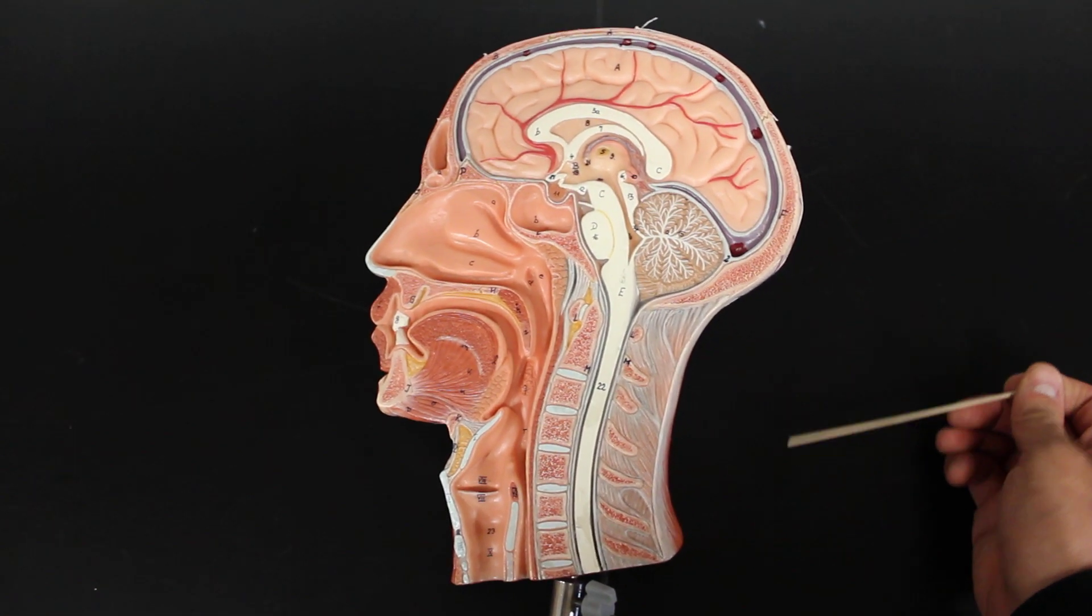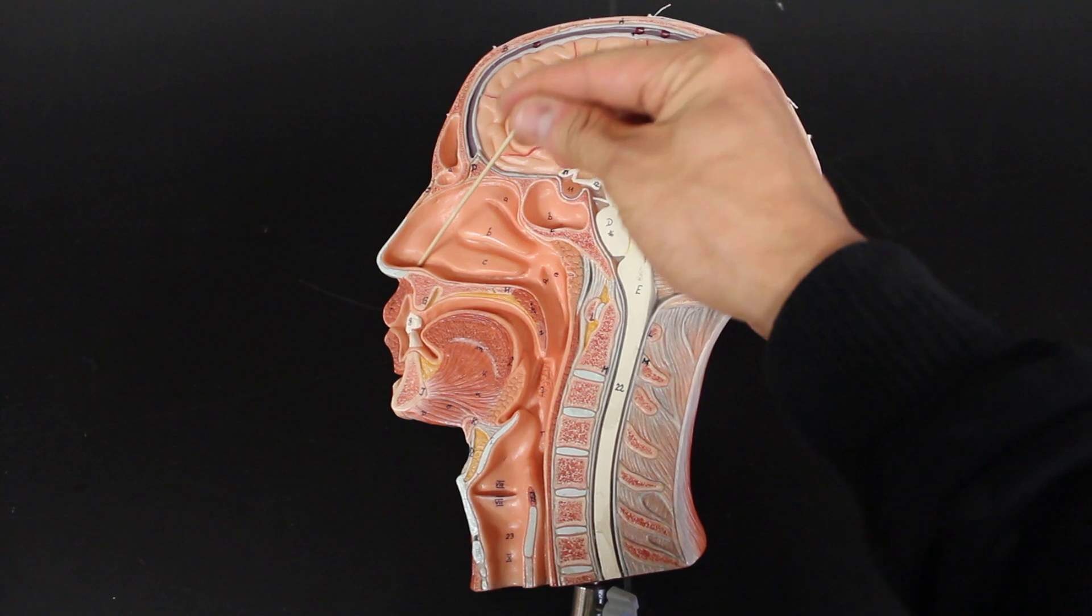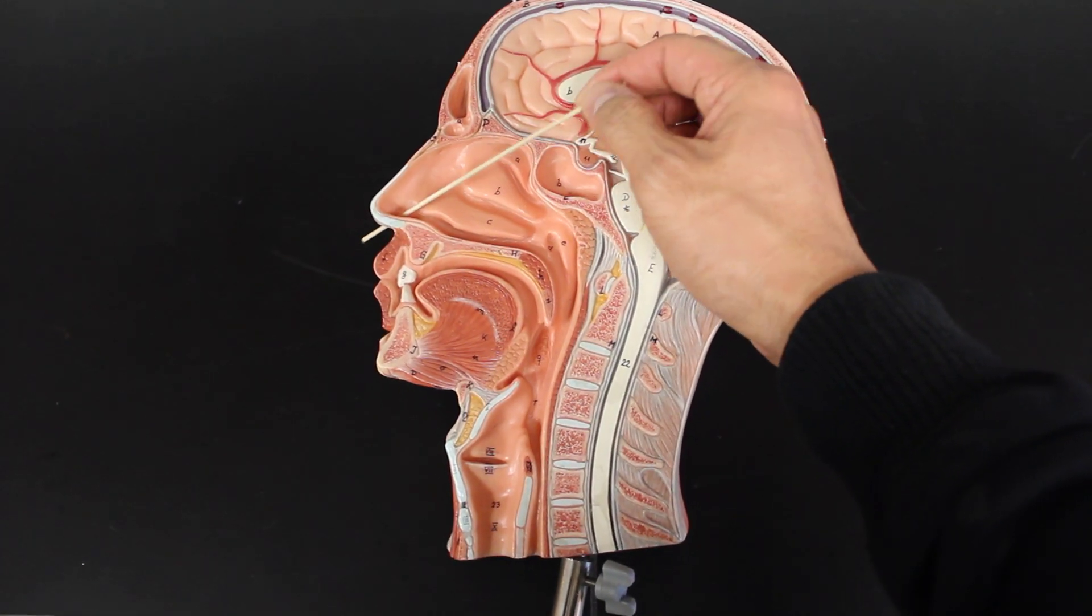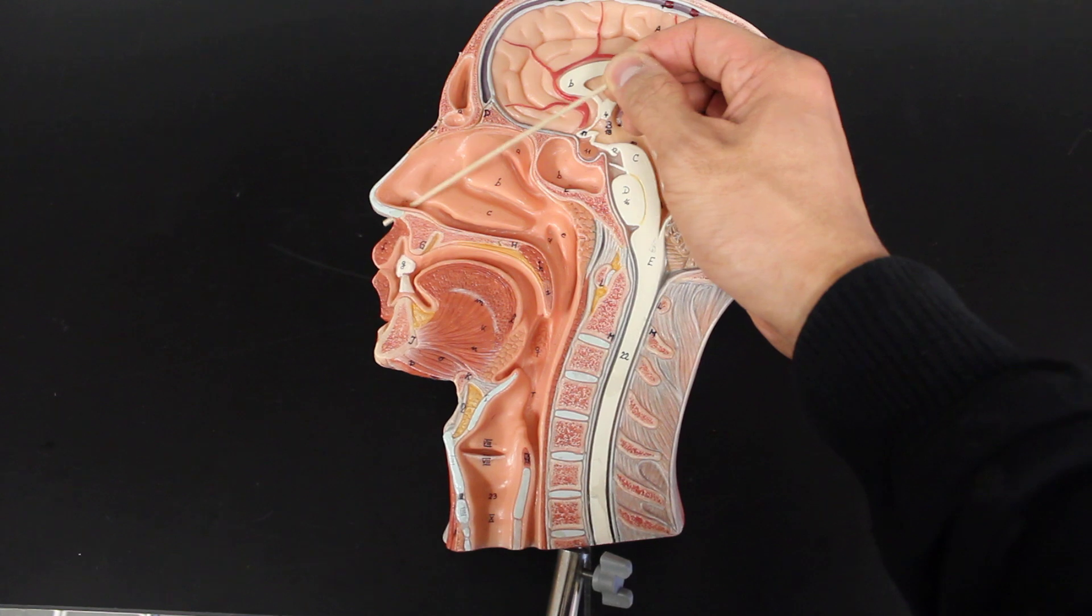The first structure that we're going to take a look at are the openings, or as many people know, the nostrils. This little hole that comes out, we also term those the external nares.